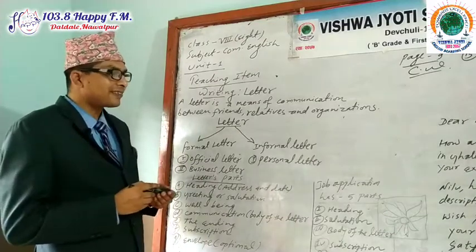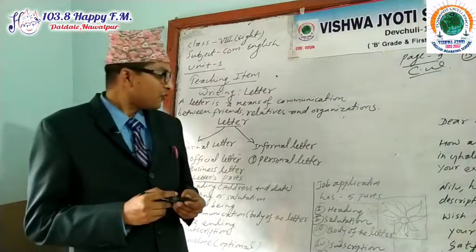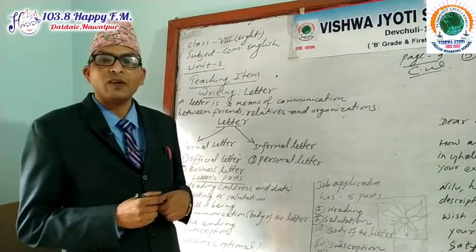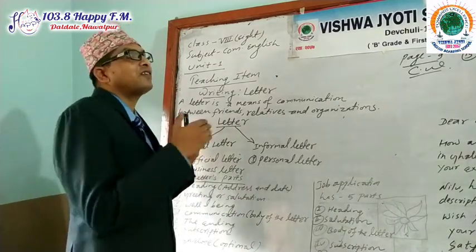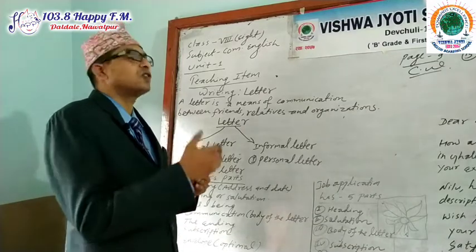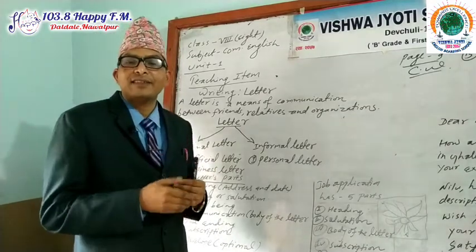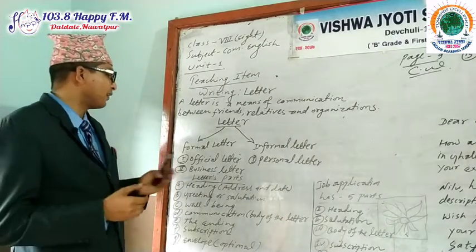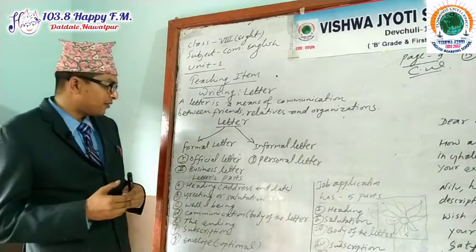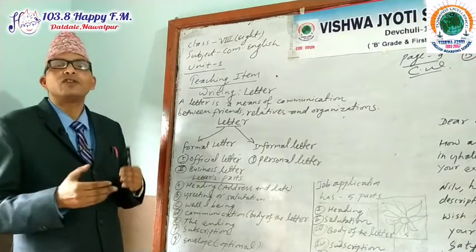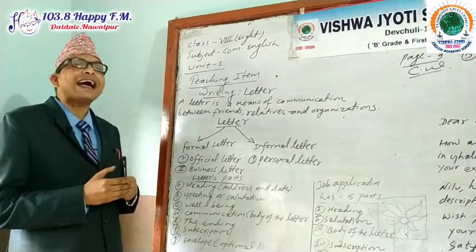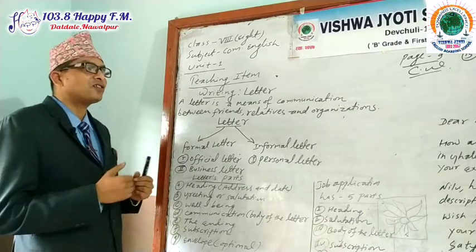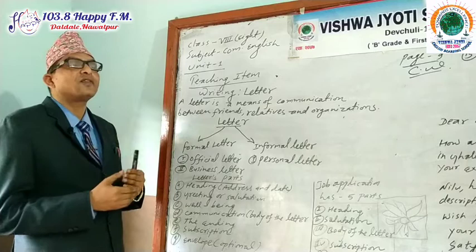The other type is an informal letter, which is called a personal letter. A personal letter is written to friends, relatives, and so on. Formal letters — official and business letters — are written to a particular authorized person, for example, if you are a job holder or if you need a job.